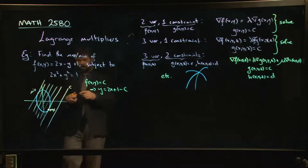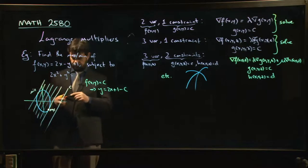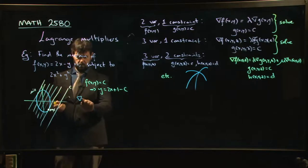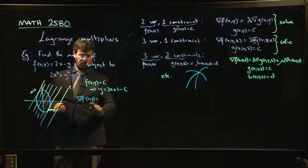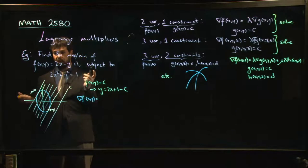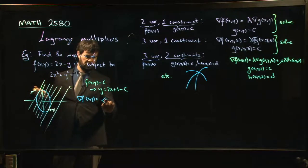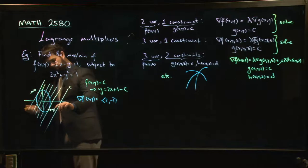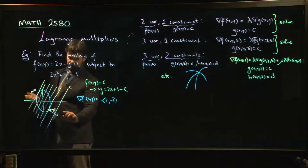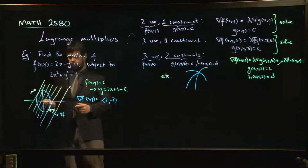And now of course the gradient of f. Well, it's the same everywhere. f is a linear function. So the gradient is just going to be the normal vector for the common normal vector for all of these lines. It's just the vector (2, -1). So it's the vector pointing out like this, gradient of f.